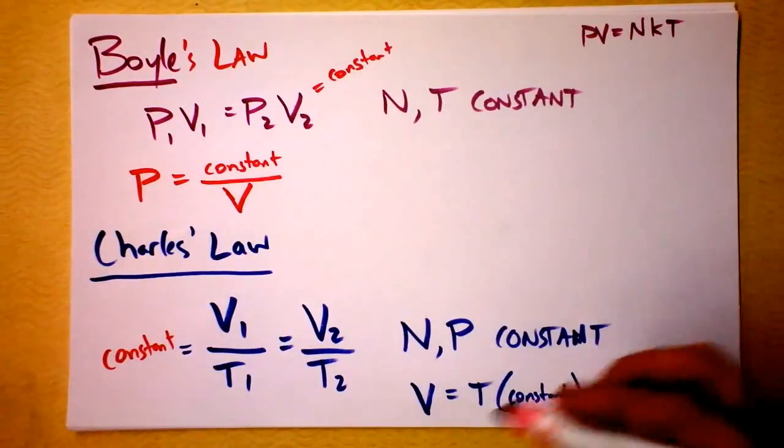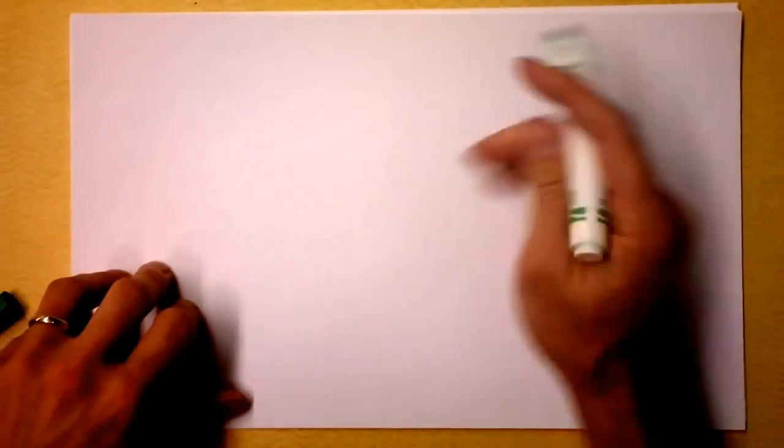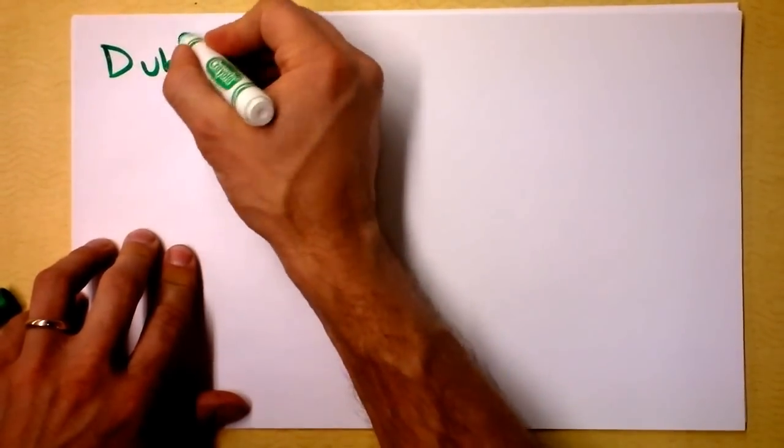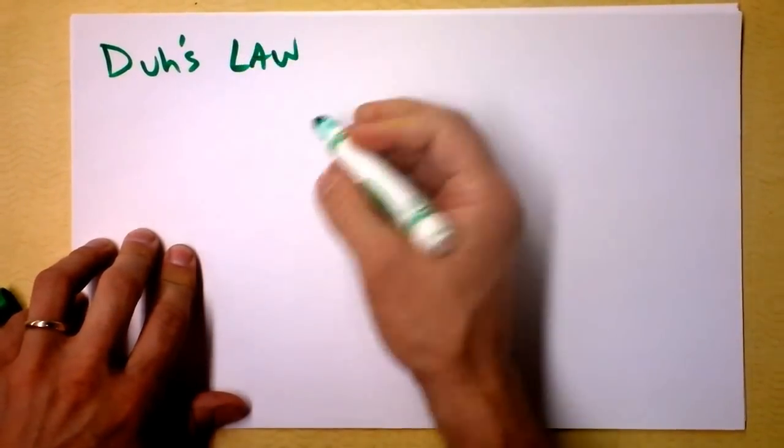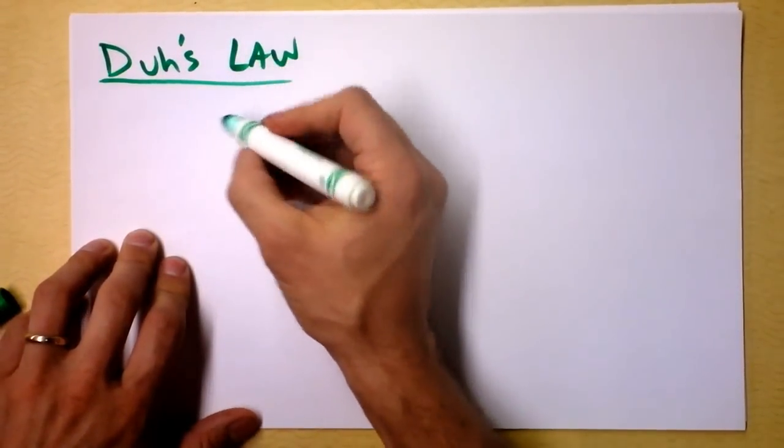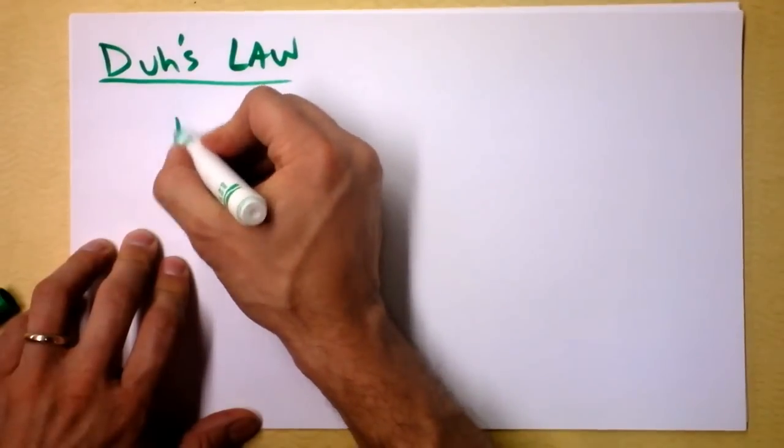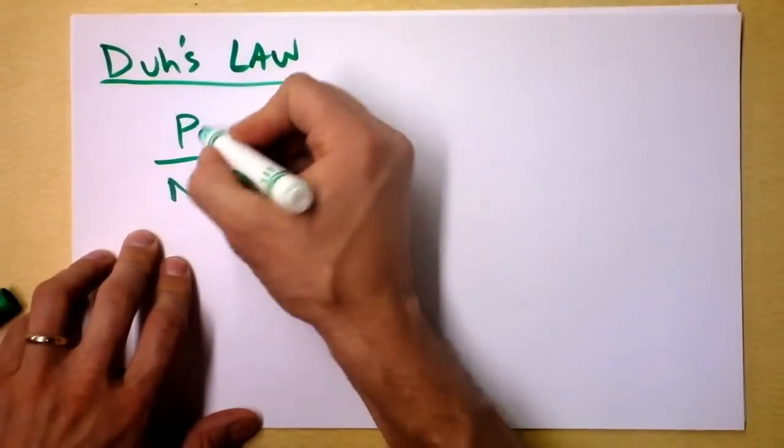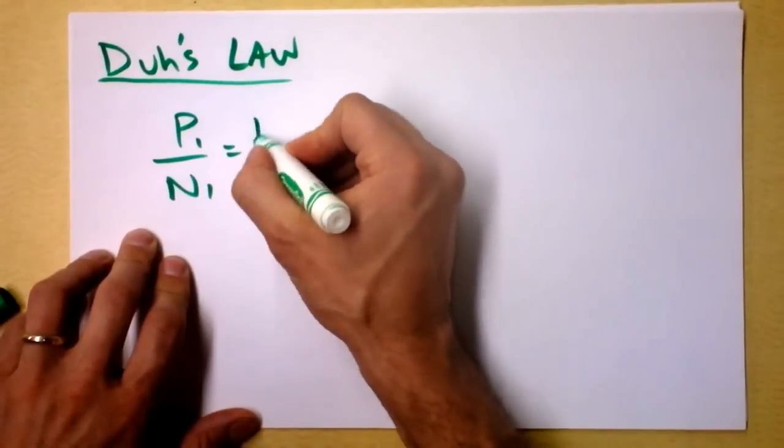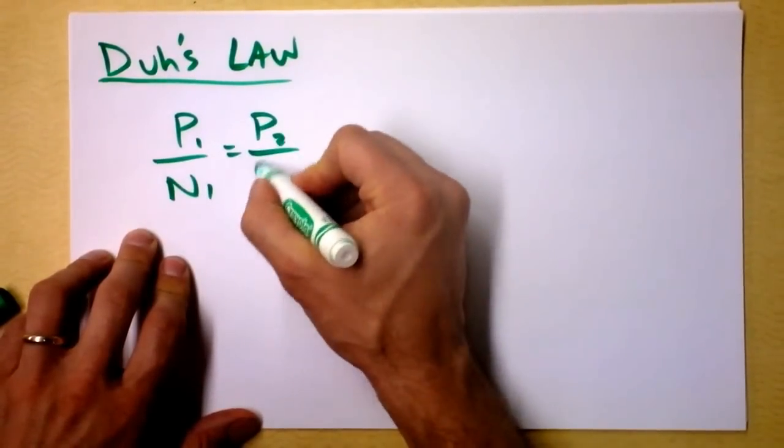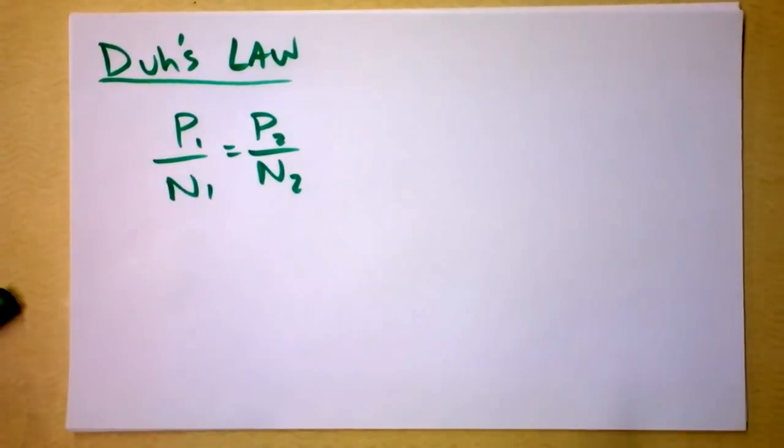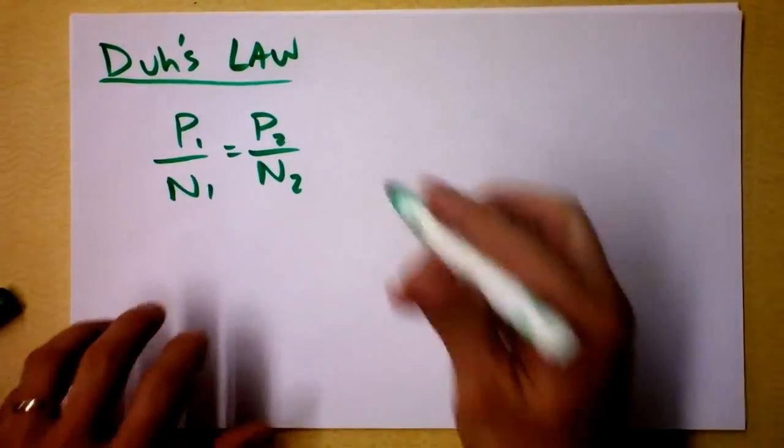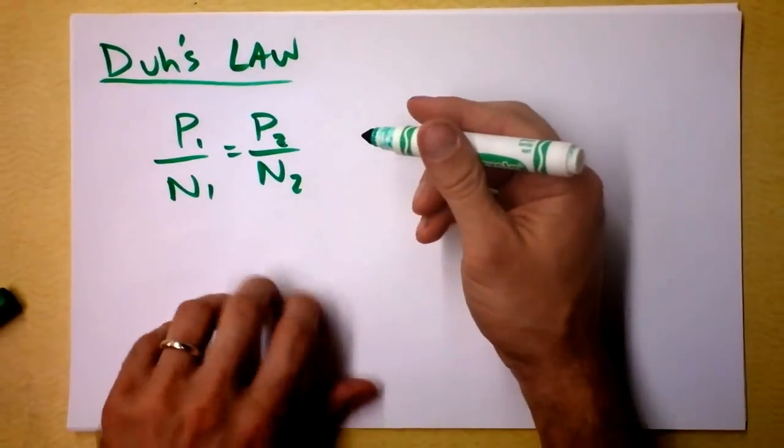So you put these things together, and then there was also a guy named, and the third part of PV is NRT, PV is NKT, came from Duh's law. Duh said, hey, if I have more stuff, I guess he said that pressure divided by the amount of stuff is equal to pressure two divided by the amount of stuff two. And he put more and more stuff in, the pressure kept going up. He was pumping up a basketball. Duh.